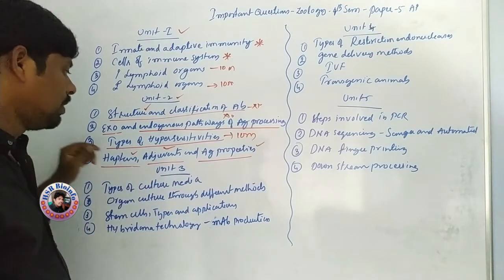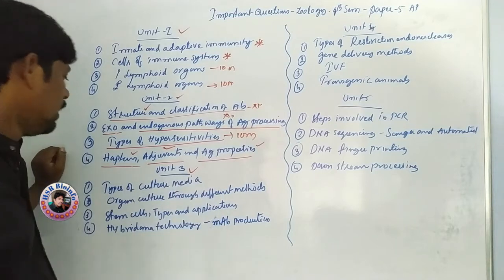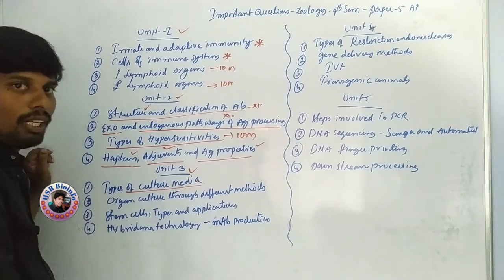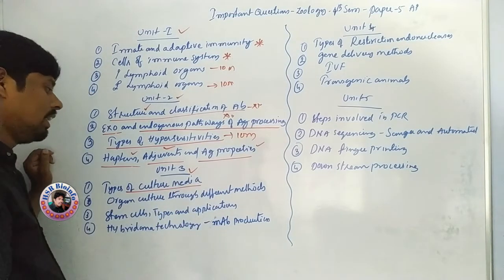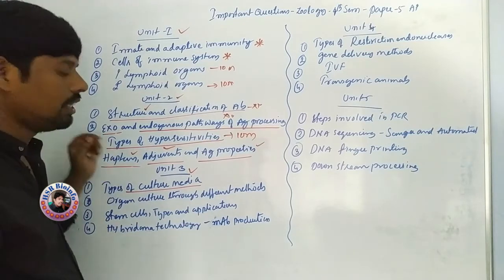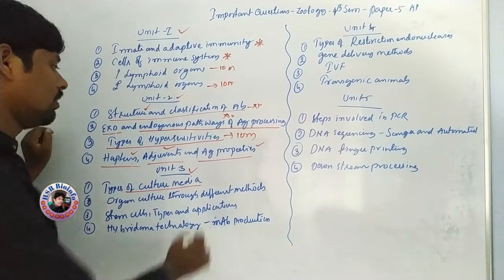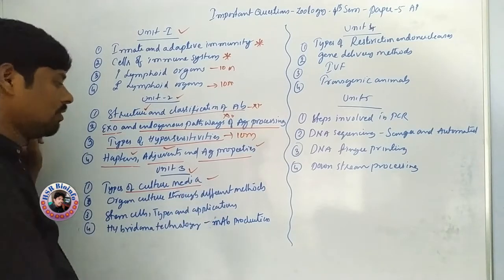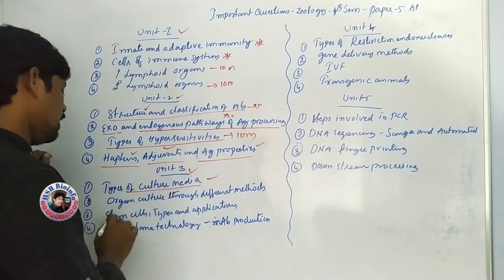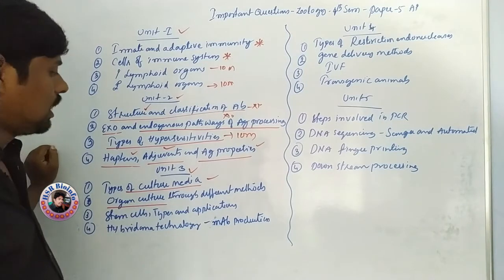This is actually Unit 2. Coming to Unit 3. Types of culture media — very important. Natural culture media, artificial culture media — this is a 10 marks question. Also organ culture.